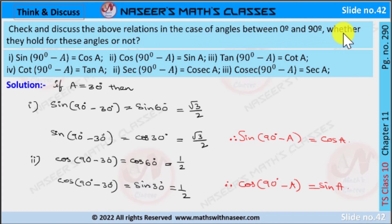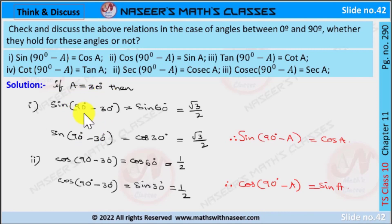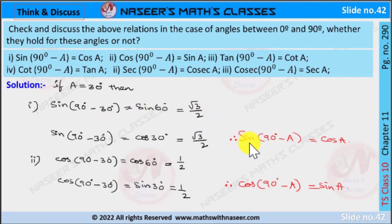For the first relation, sin(90° - a) = cos(a): if a = 30°, then sin(90° - 30°) = sin(60°). We already know sin(60°) = √3/2. By using the complementary angle rule, sin(90° - a) is written as cos(a), so sin(90° - 30°) = cos(30°). We already know cos(30°) = √3/2.